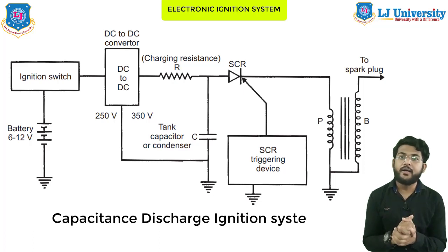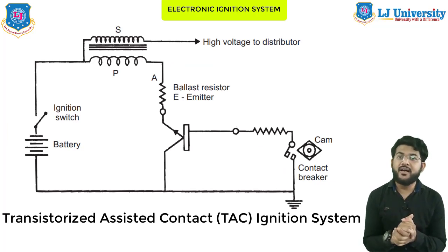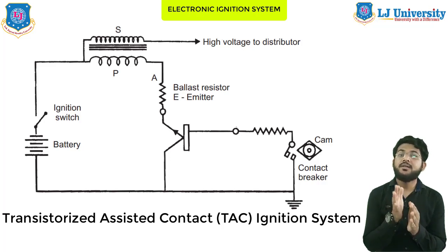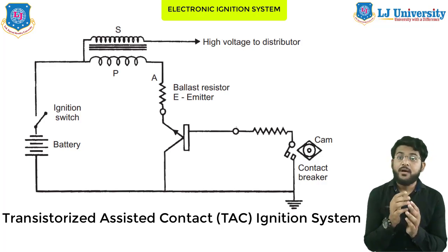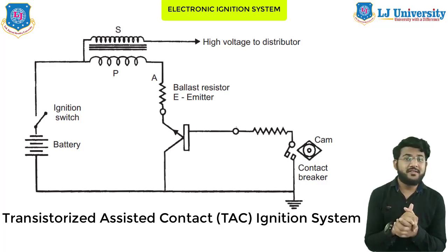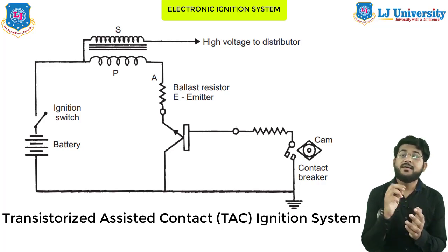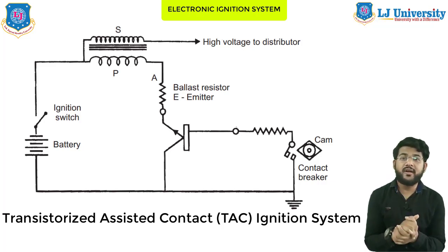Next is the transistor-assisted contact breaker system. Its main advantages are: first, low breaker current ensures longer life; second, the smaller gap and lighter point assembly increases dwell time, minimizing contact bouncing and improving repeatability of secondary voltage; third, low primary inductance reduces the primary current drop-off at high speeds. Disadvantages include: mechanical breaker points are still necessary for timing, the cost of the ignition system is increased, and the voltage rise time at the spark plug remains about the same as before.